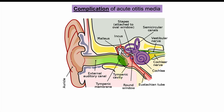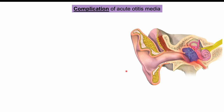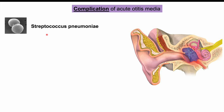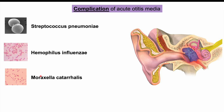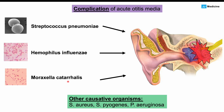In acute otitis media, the middle ear is affected. Acute otitis media is often due to a bacterial infection. The three main bacterial species that cause it are Streptococcus pneumoniae, Haemophilus influenzae, and Moraxella catarrhalis. Other organisms include Staphylococcus aureus, Streptococcus pyogenes, and Pseudomonas aeruginosa. Understanding these bacteria is important because it will help us understand treatment modalities later in this lesson.